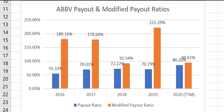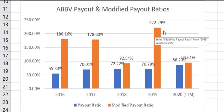Looking at AbbVie's payout and modified payout ratios: the payout ratio — what percentage of annual profits are paid as dividends — is usually about 70%, but jumped to 86% in the most recent period due to a rough year. The modified payout ratio — dividends plus share buybacks divided by profits — concerns me more. That ratio cannot sustainably exceed 100%. In 2019, they may have gotten a great deal on their shares, but it cost them. Going forward, they'll have to pull back on share buybacks.